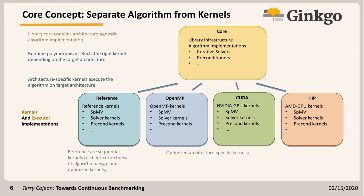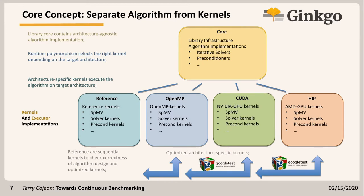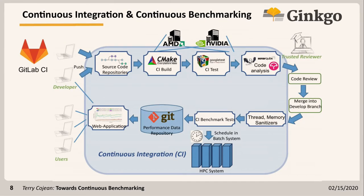We always test these optimized backends against the reference backend so that we know we don't lose any accuracy when we optimize. The main point of this work is the continuous integration cycle and continuous benchmarking, which we will go through in detail.